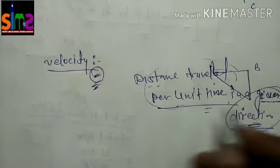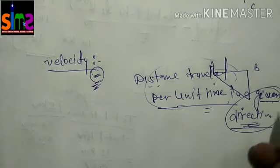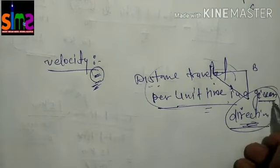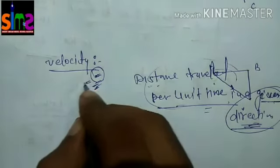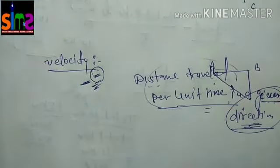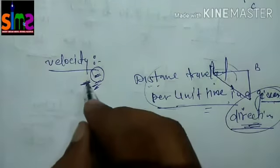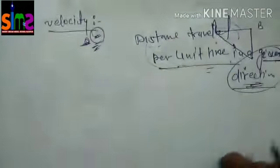So what difference is there? Speed is a scalar quantity and velocity is a vector quantity.